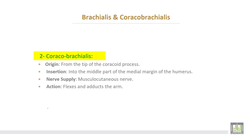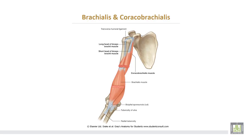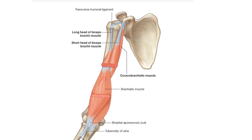Coracobrachialis muscle takes origin from the tip of the coracoid process in common origin with the short head of the biceps. Insertion of coracobrachialis is into the middle part of the medial margin of the humerus. Nerve supply from the musculocutaneous nerve. Action: flexes and adducts the arm. After cutting the biceps muscle, this is the brachialis muscle and this is the coracobrachialis from the tip of the coracoid process, with insertion into the middle of the medial border of the humerus.